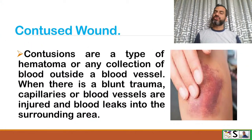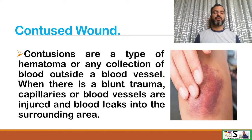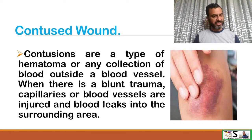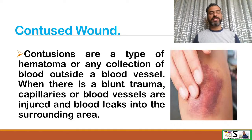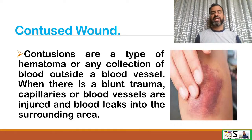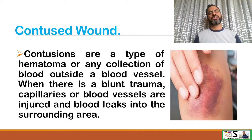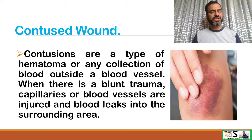Contused wound: contusions are a type of hematoma, or any collection of blood outside blood vessels. When there is blunt trauma, capillaries or blood vessels are injured and blood leaks into the subcutaneous tissue or surrounding area under the skin.